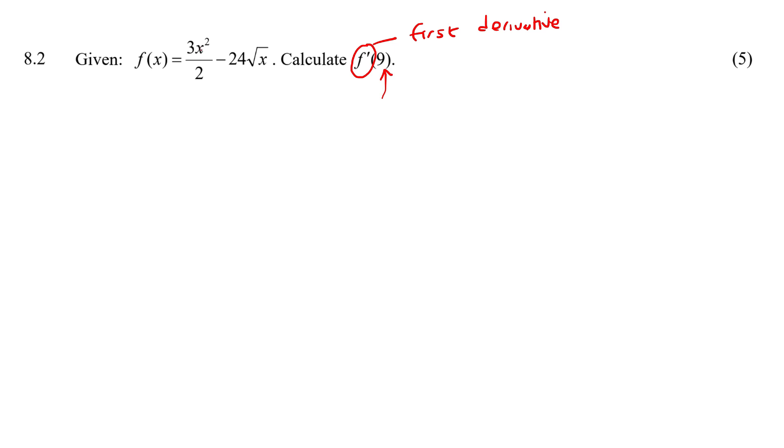So to take the first derivative here, we just need to make a few modifications first. We can leave that 2 at the bottom, that's fine. You might feel more comfortable writing it like that. And then x square root is the same as x to the half.